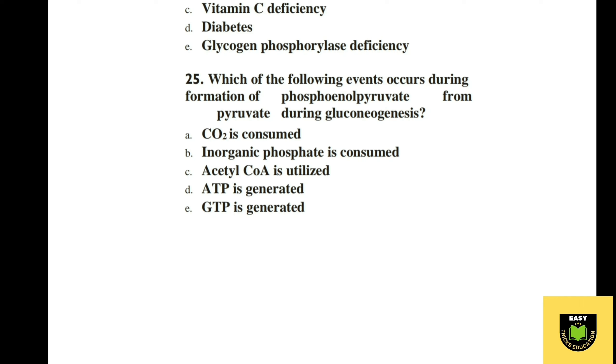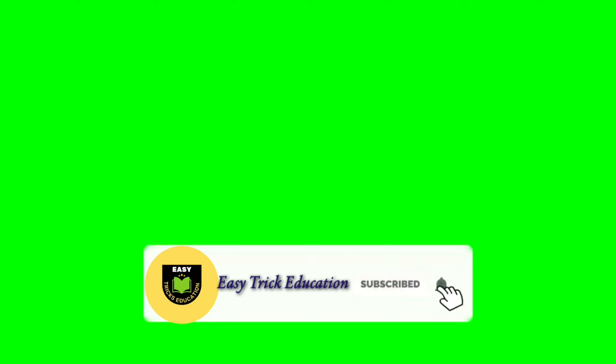Question 25. Which of the following events occurs during the formation of phosphoenolpyruvate (PEP) from pyruvate during gluconeogenesis? A CO2 is consumed, B inorganic phosphate is consumed, C acetyl-CoA is utilized, D ATP is generated, E GTP is generated. The correct option is A, CO2 is consumed.